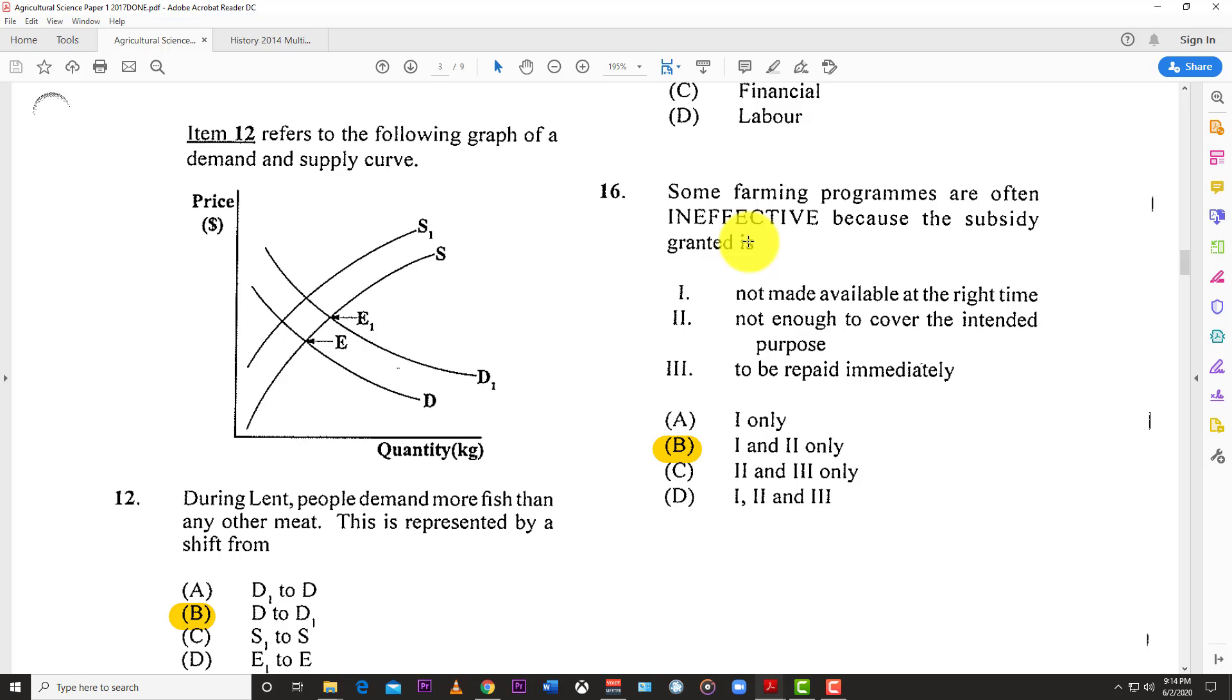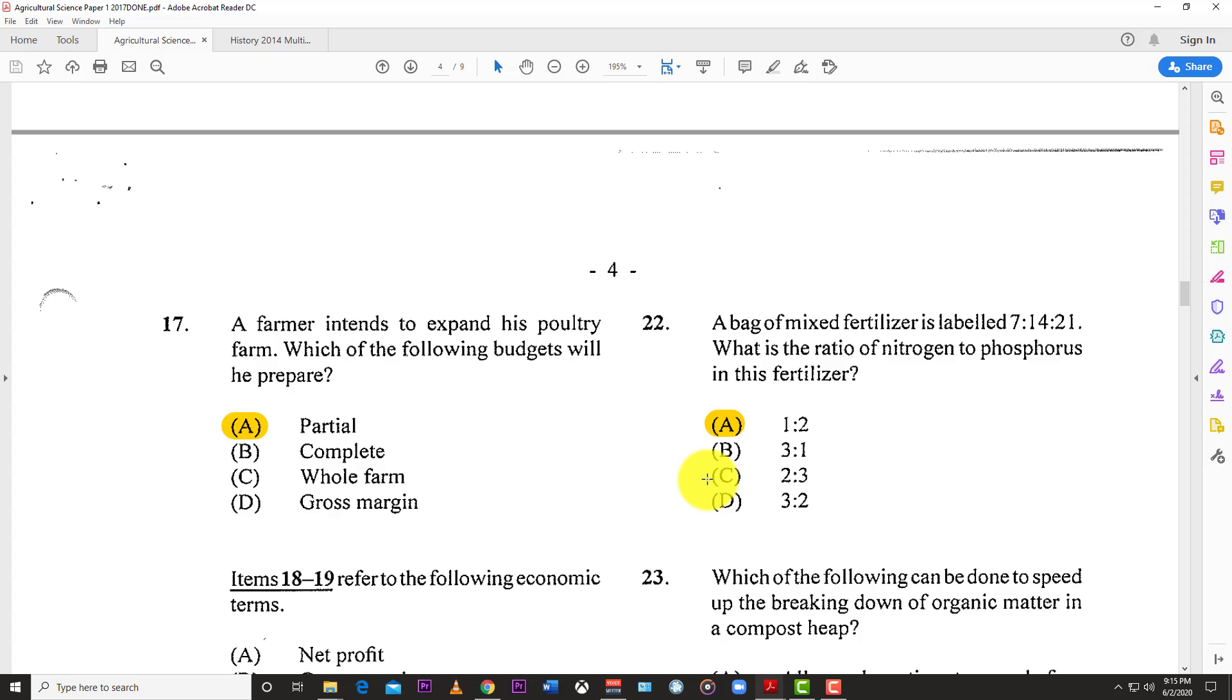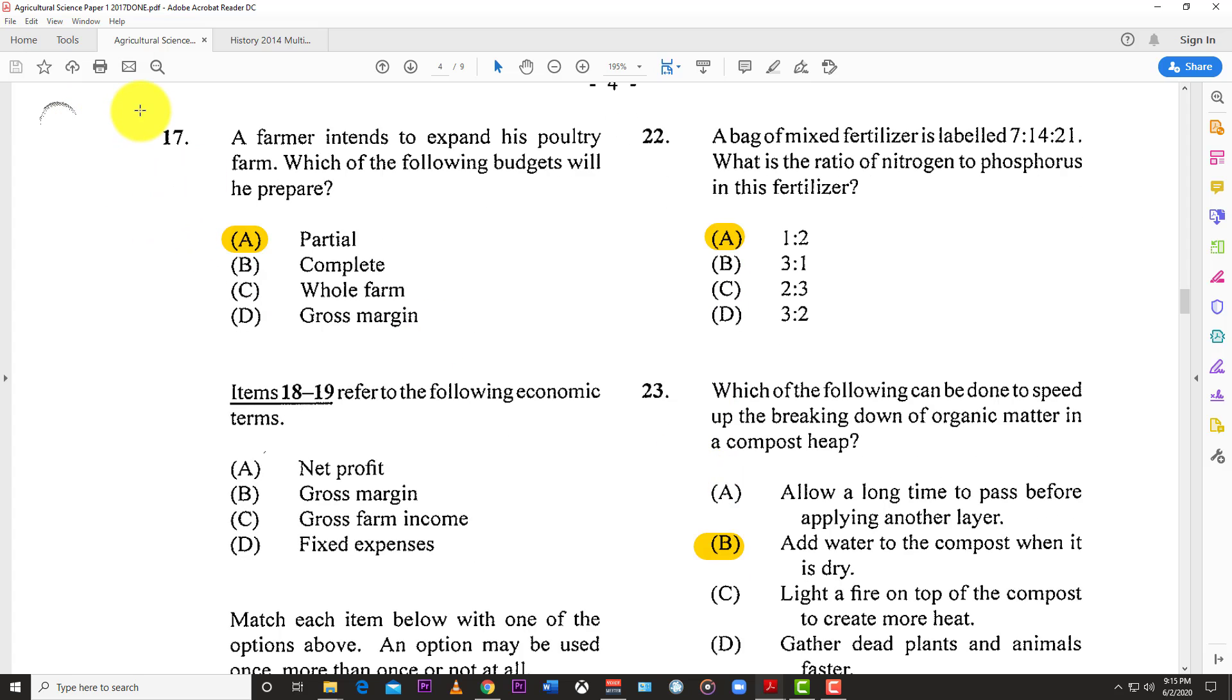Number sixteen: Some farming programs are often ineffective because the subsidy granted is not made available at the right time and does not cover the intended purpose. The best answer is B, one and two. Subsidies are not loans, so you don't have to repay them.